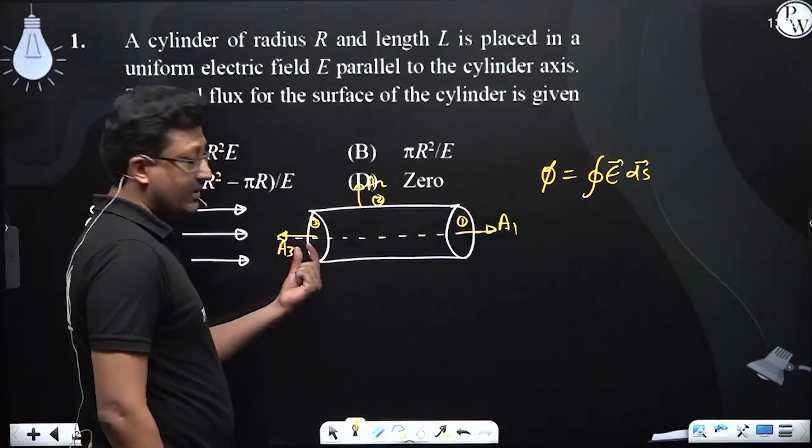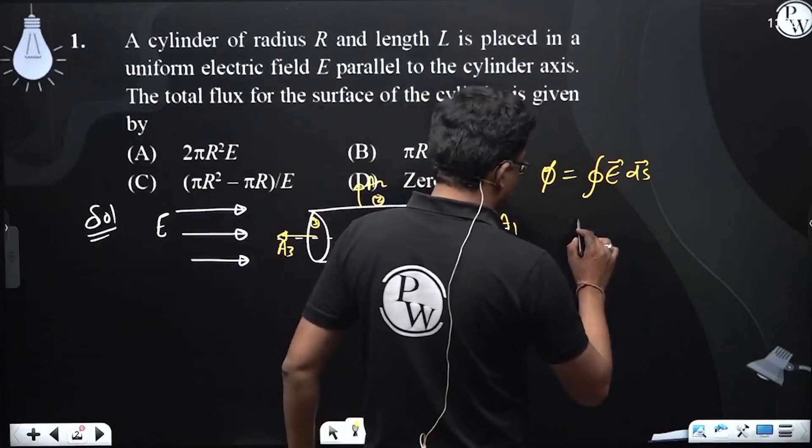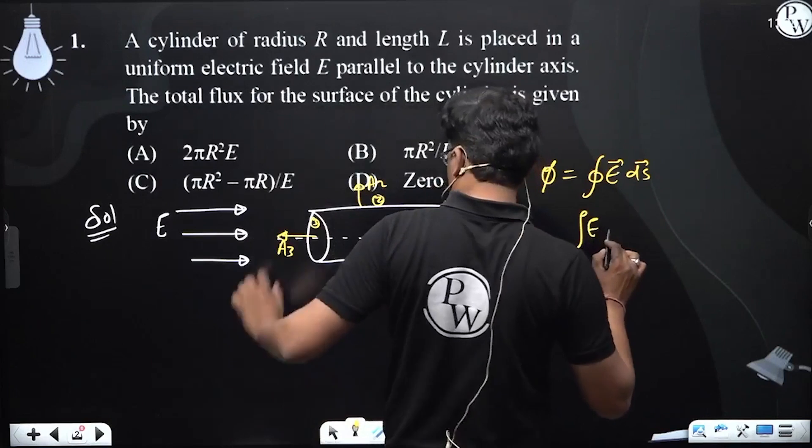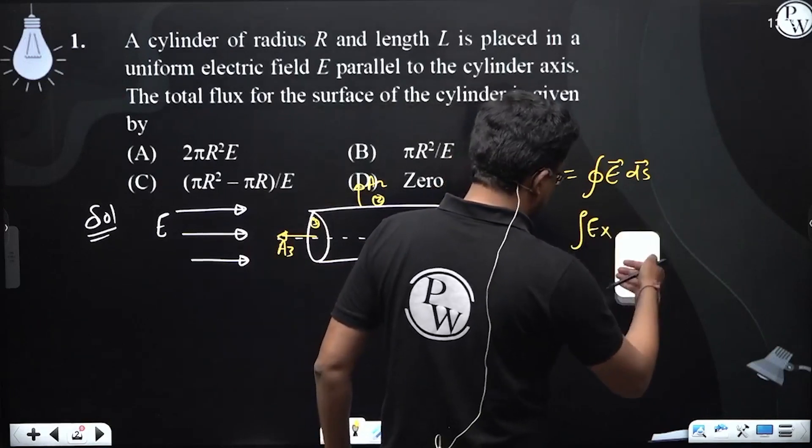this area vector is in opposite direction, that of electric field, so electric field into A3, or I can write it directly,